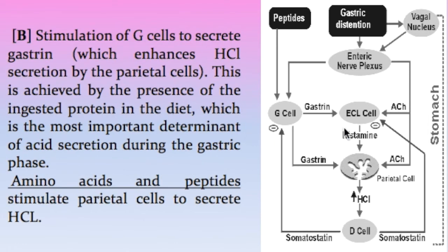It is important to know that we can use a histamine antagonist to block the H2 receptor in order to decrease gastric acid secretion, used as treatment in peptic ulcer patients. This drug is called cimetidine. Like omeprazole, already mentioned, omeprazole acts on a different mechanism by inhibiting the proton pump — hydrogen-potassium ATPase — which is a step in the formation of gastric acid.